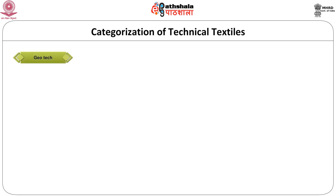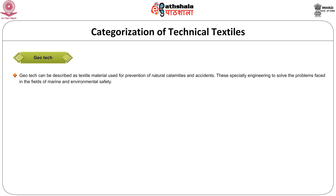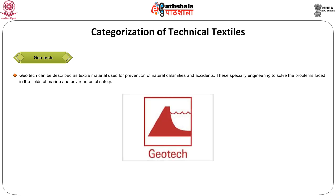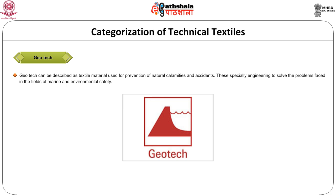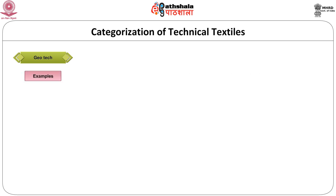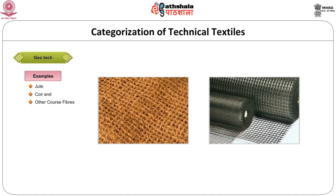The next category of technical textiles is geotextiles. This is described as textile material used for prevention against natural calamities and accidents. It is used for marine engineering and environmental safety. This is depicted as a triangle with waves indicating a riverbed. Jute, coir and other coarse fibers are used, and non-woven technique is used as the production method for geotextiles. We can see two pictures of geogrids and geomembranes as examples.